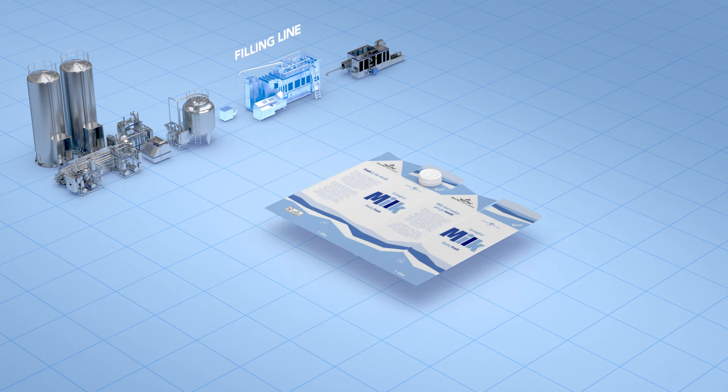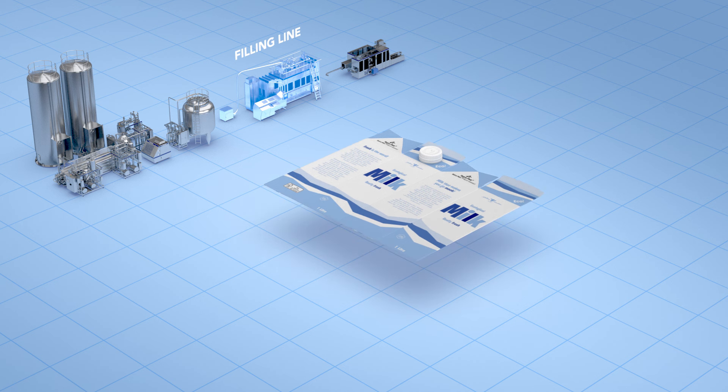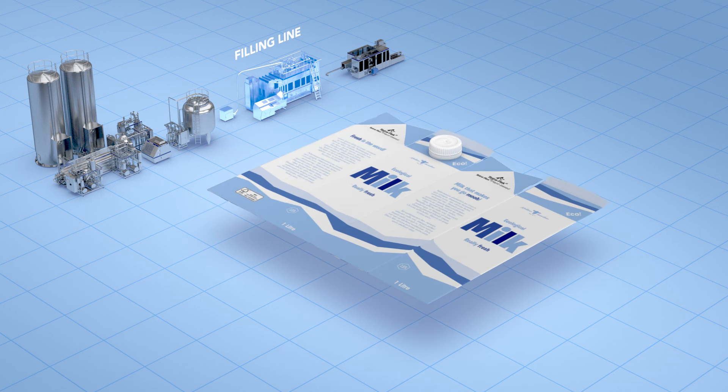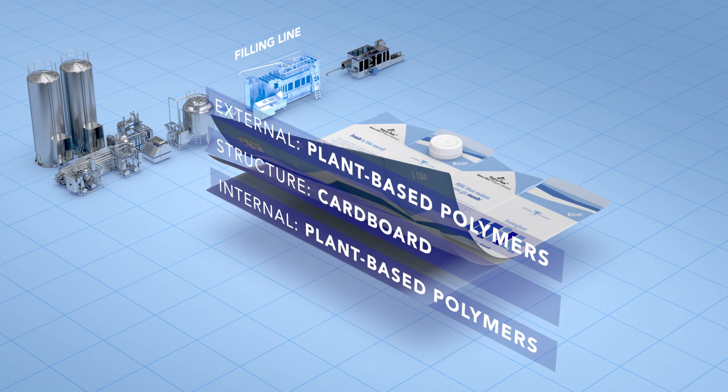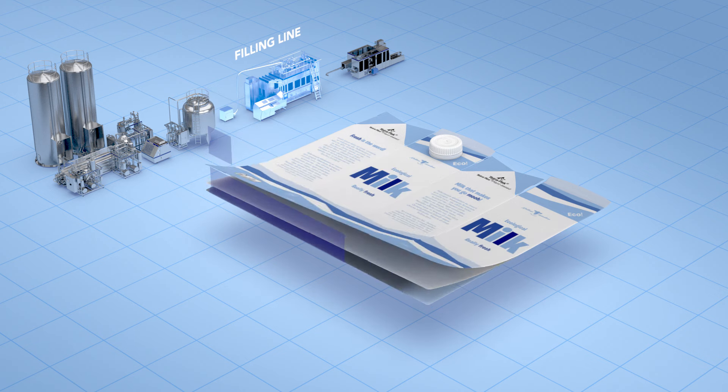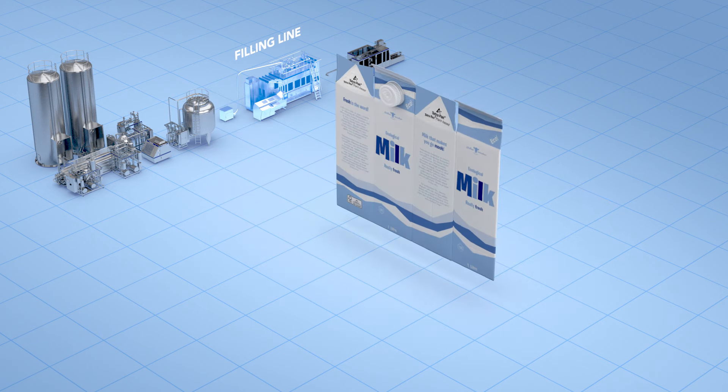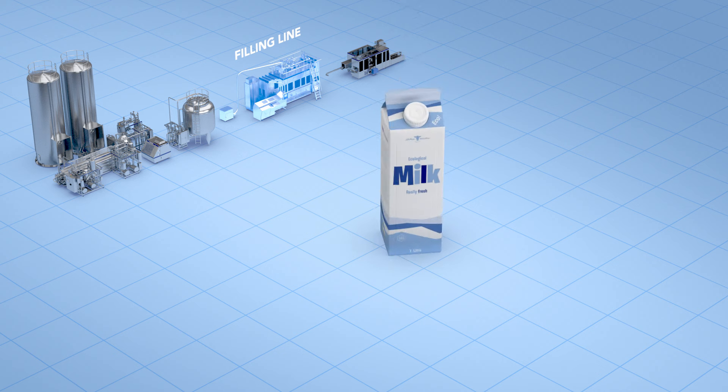Finally, the milk is packaged under strict hygienic conditions. The packaging protects against recontamination by microorganisms and against light and oxygen that can destroy vitamins and affect the taste. And of course, it also makes it easier to get the milk from the dairy to the store and then home to your fridge.